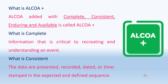What is ALCOA+? Per FDA guidelines, data integrity requirements are extended by adding Complete, Consistent, Enduring, and Available to ALCOA, which is called ALCOA+. What is complete? Information that is critical to recreating and understanding an event should be recorded. What is consistent? Data are presented, recorded, dated, or time-stamped in the expected and defined sequence. Dates and times of activities or events should be recorded in the relevant data in the sequence of sub-activities.